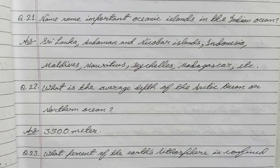Question 21: Name some important oceanic islands in the Indian Ocean. Answer: Sri Lanka, Andaman and Nicobar Islands, Indonesia, Maldives, Mauritius, Seychelles, Madagascar, etc.